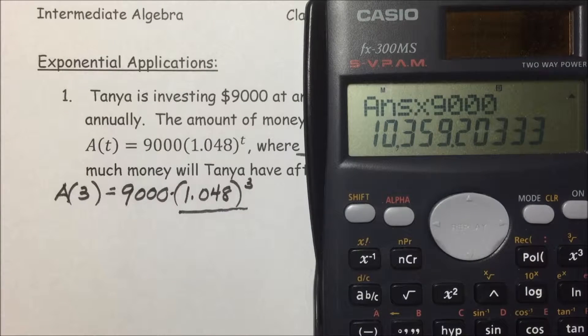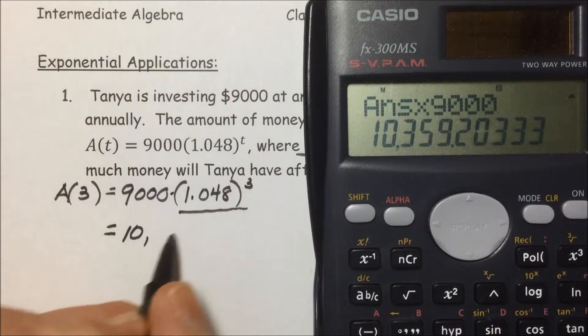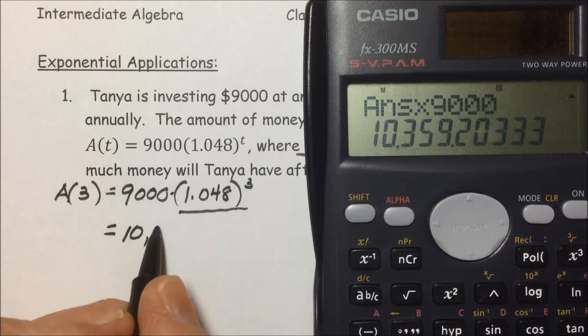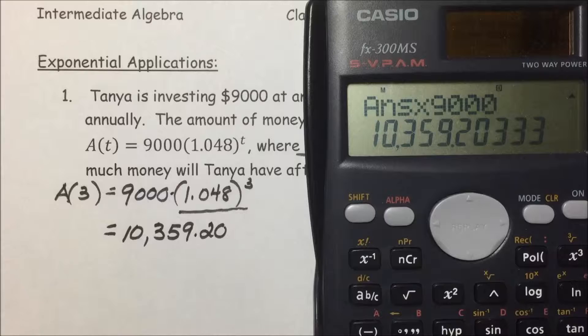Since this is money, we'll round this to the nearest cent. So Tanya will have $10,359.20 in her account.